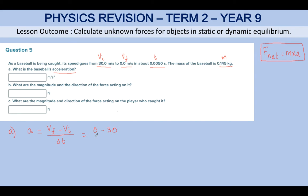Initial is 30 upon 0.005. If you do this calculation, you get negative 6,000 m/s². That's the unit for acceleration—here you get negative 6,000.